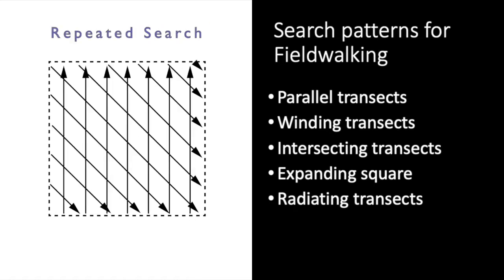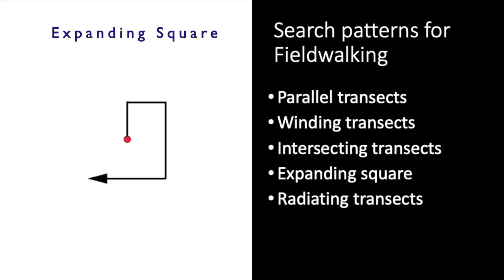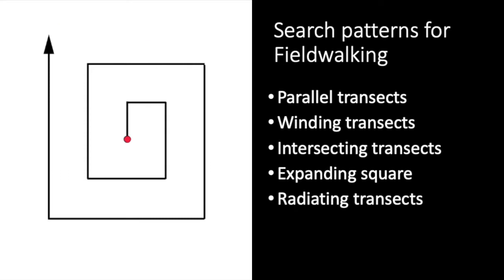Where surveyors make two passes on the same parcel of ground, it is optimal for the second pass to be at a diagonal to the first. For purpose of surveys with the aim of finding a particular target, such as an historical fort whose location is only approximately known, an expanding square search can be very useful, with search beginning at the point where the target is predicted to occur.